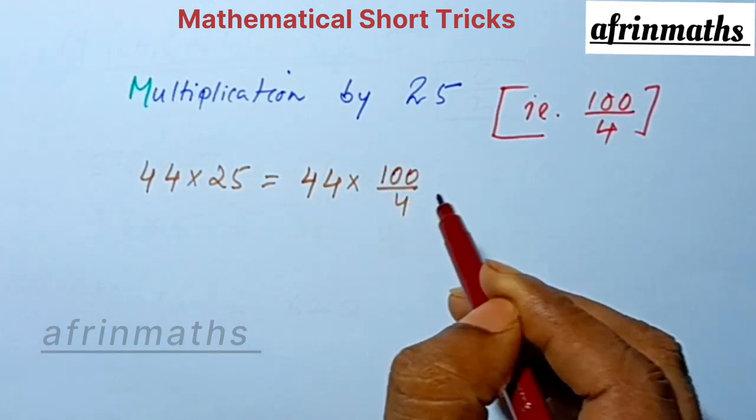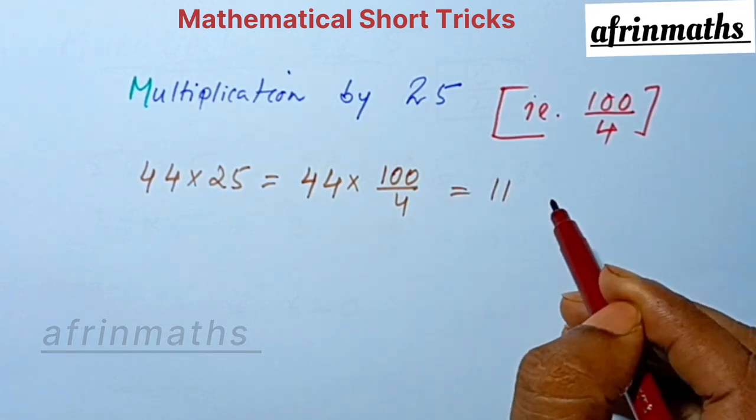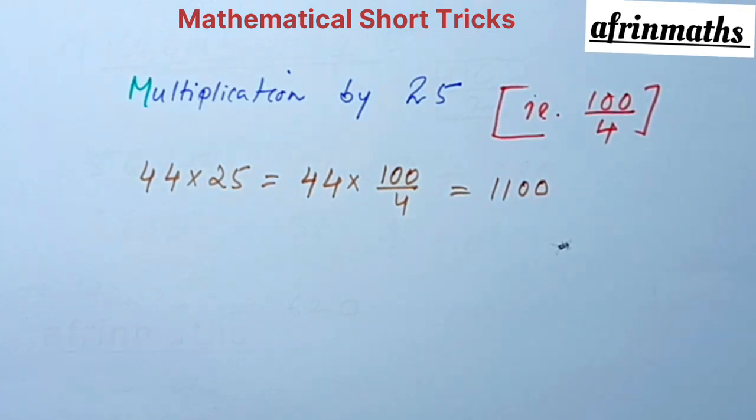Now we can divide this 44 by 4, so we will get 11, and we have two 0s here, so 1100. This was the answer.